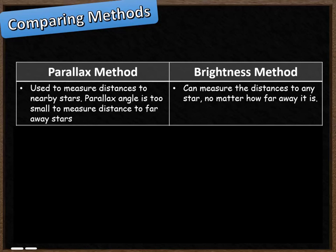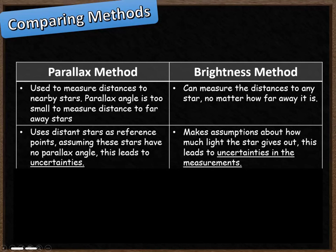With the parallax method we use distant stars as reference points. We assume that the stars that are really far away have no parallax angle at all. However, they probably have a very tiny amount, so that adds a little bit of uncertainty to our measurement, the addition of some inaccuracy. The brightness method assumes that the light the star gives out is exactly the same as other stars that are the same colour. That's going to lead to some uncertainty in my measurement and some inaccuracy.